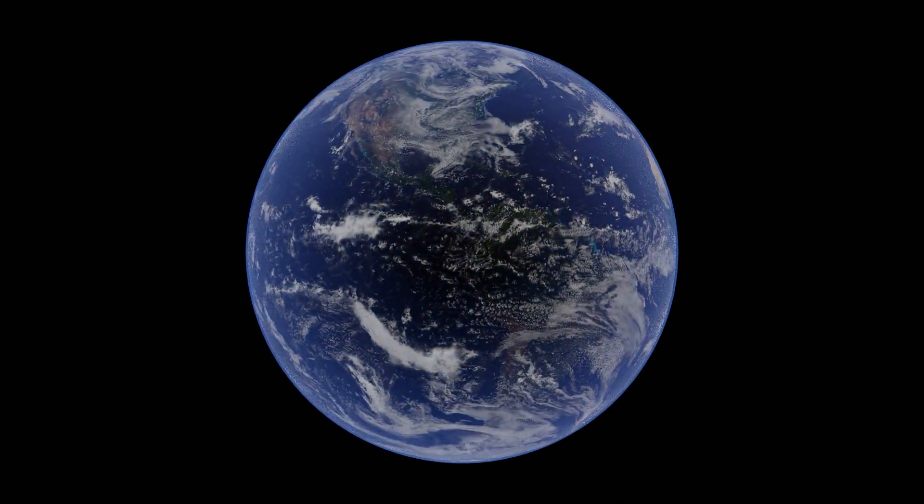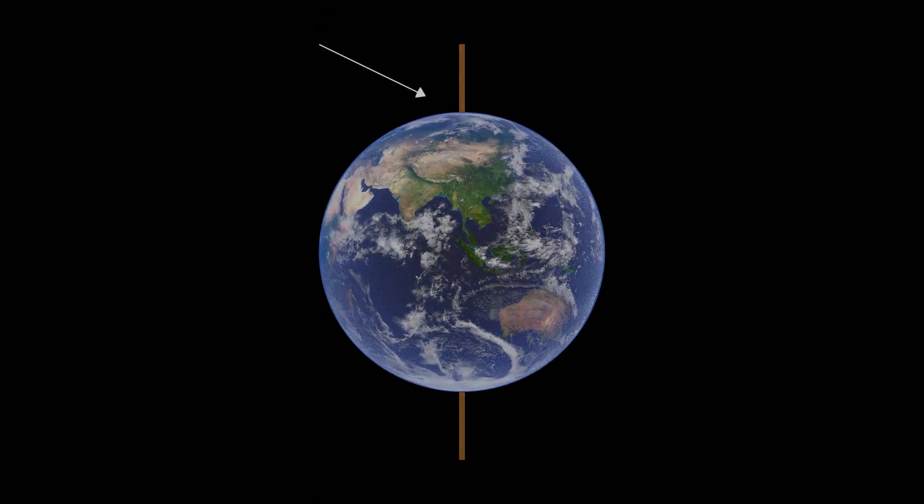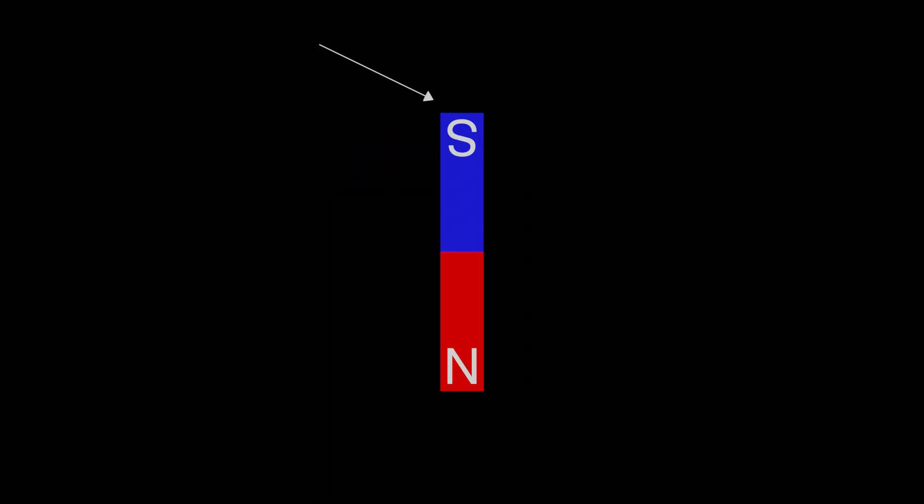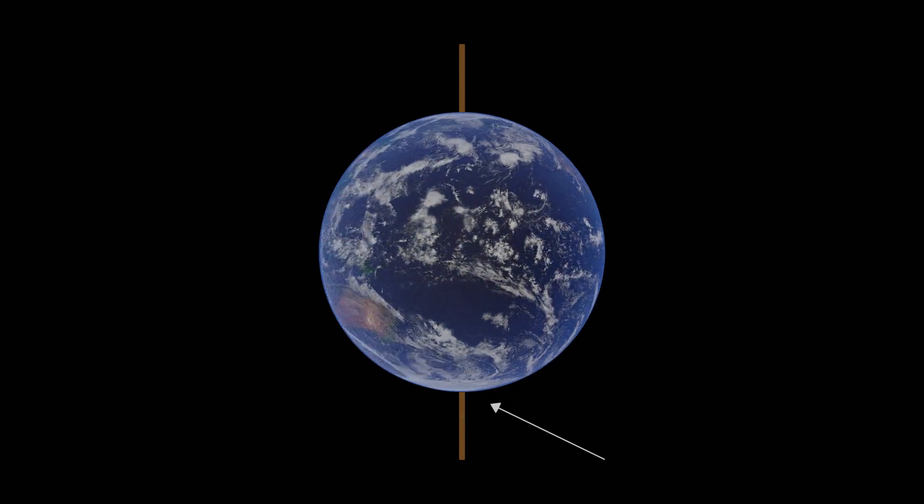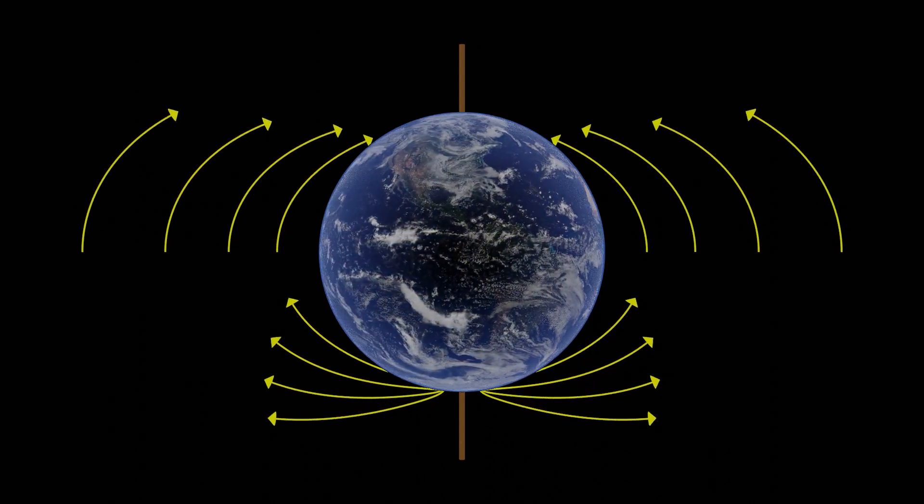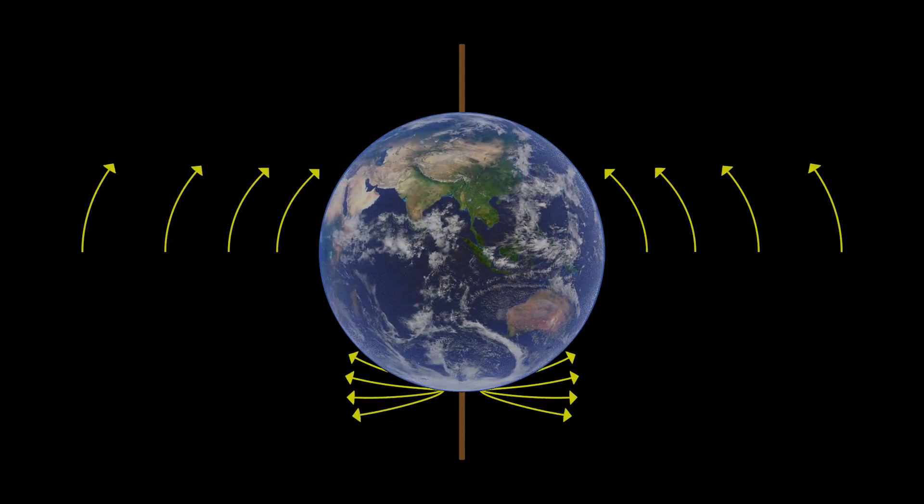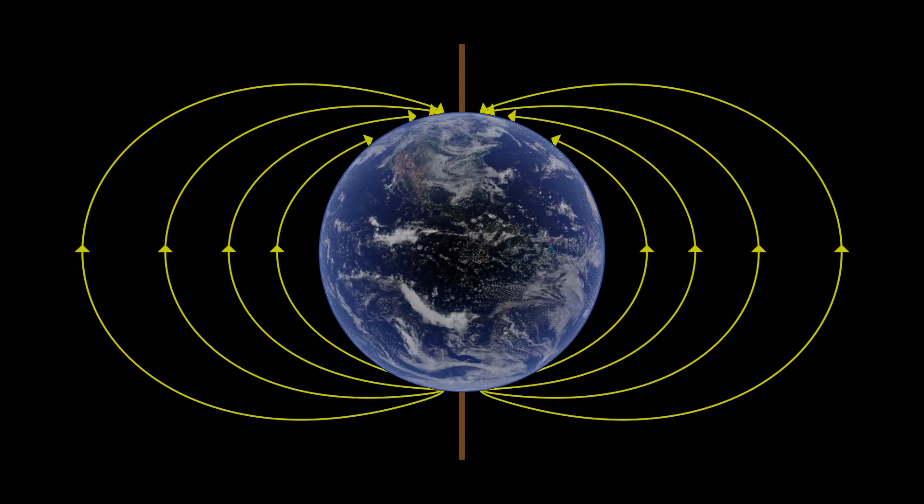Indeed, the Earth is just one giant magnet, and a bit confusingly, the geographic north pole of the Earth, meaning where Santa Claus lives, is very very close to the magnetic south pole of the Earth. And the geographic south pole of the Earth, near Antarctica, that's very close to the magnetic north pole of the Earth. So the magnetic field lines that extend out of the Earth come from the Earth's magnetic north pole near Antarctica, and circulate all the way to the Earth's magnetic south pole in the Arctic Ocean.